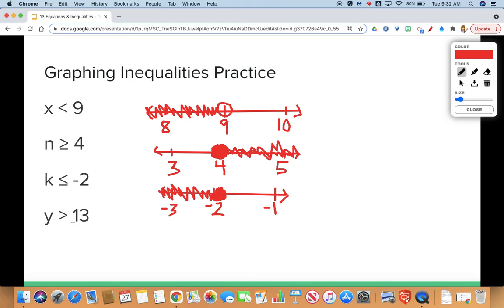One more. Why don't you pause and try this one on your own. Press play when you're ready to see the answer for y is greater than 13. All right, you guys. You should have had a number line with 12, 13, and 14. You should have had an open dot because it was a greater than symbol without the or equal to. And then y is greater. So we shade up towards 14 and values that are greater than 14.